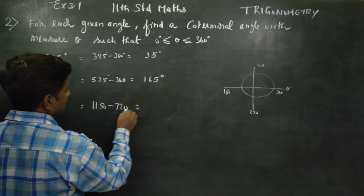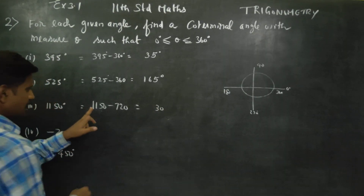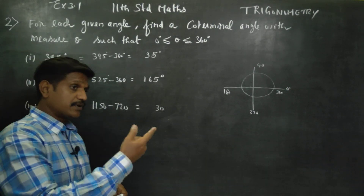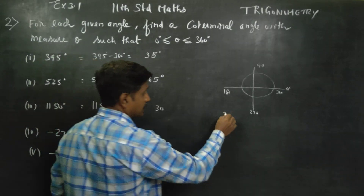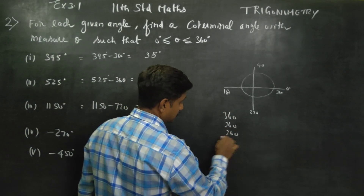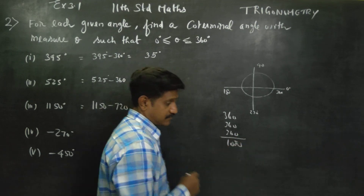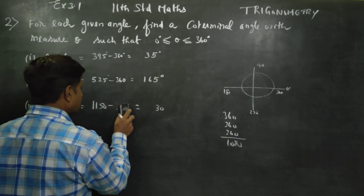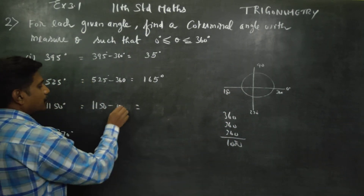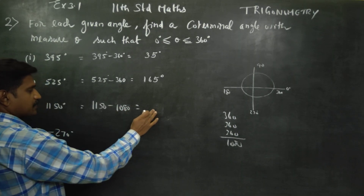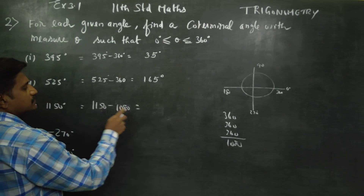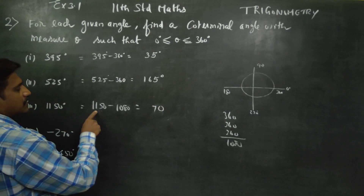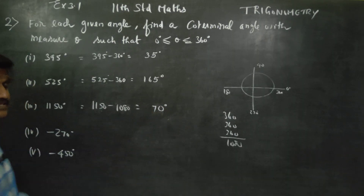For 1080 degrees, you subtract 360 multiple times. 1080 minus 360 is 720, minus 360 is 360, minus 360 is 0. But if the problem is 1150, then 1080 minus gives you 70 degrees as the co-terminal angle answer.